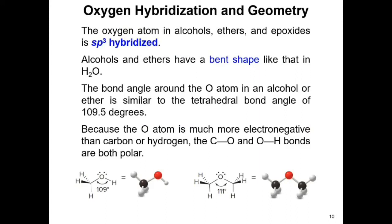The oxygen atom in alcohols, ethers, and epoxides is sp3 hybridized. Both alcohols and ethers have a bent shape because the oxygen contains two lone pairs and two sigma bonds. The bond angle around the oxygen in an alcohol is about 109 degrees and in an ether about 111 degrees — both close to the ideal tetrahedral angle of 109.5 degrees, compared to an epoxide's 60 degrees. Since oxygen is more electronegative than carbon or hydrogen, the C–O and O–H bonds are polar, making them reactive sites in organic reactions.